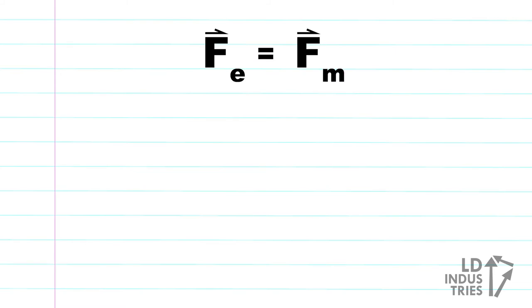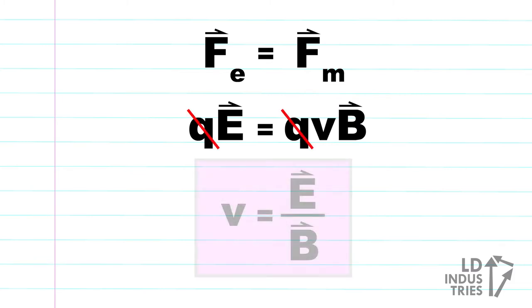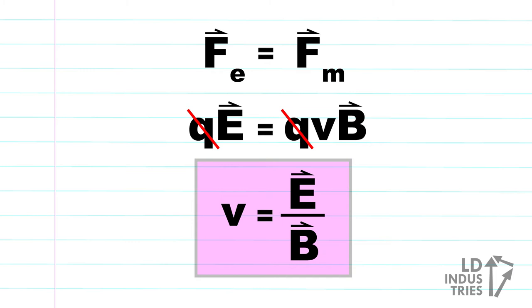Now let's do some math. We can write a balanced forces statement showing that the electric force equals the magnetic force. Since the equation for electric force is charge times the electric field strength, and for magnetic force is charge times the speed times the magnetic field strength, we can substitute those equations in. Cancelling out the charge and doing some algebra shows us that we can determine the speed of the particle, V, from the magnitude of the electric field and the magnetic field needed to create uniform motion.